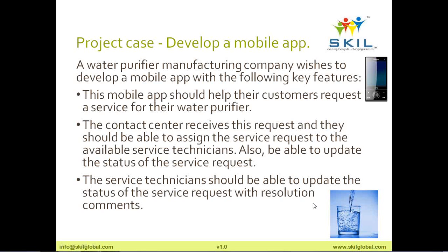Feature number two: someone from the contact center receives this request and will be able to assign the service request to an available service technician using the mobile app. The contact center should also be able to update the status of the service request — for example, showing it has been assigned to a technician with their name and mobile number, so the customer can see the status. Feature number three: the service technician should be able to update the status of the service request with the resolution comment after completing the maintenance work.